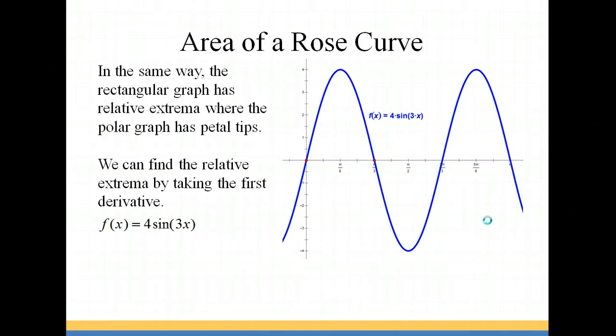In the same way, we can find the petal tips of the polar graph by looking for the relative extrema of the rectangular form of the graph. Where the rectangular form of the graph has relative maximum or minimum points, the polar graph will have petal tips. We can find these relative extrema by finding our first derivative and setting it equal to zero.